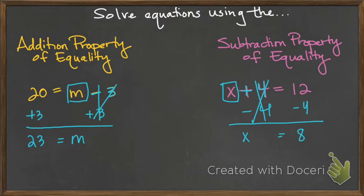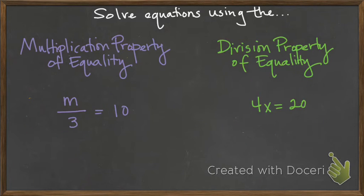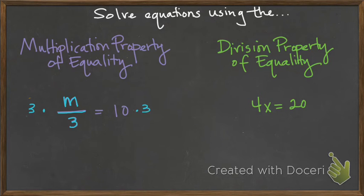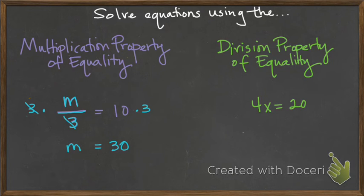Now let's talk about multiplication and division. For the one on the left, if I want to solve for m, I need to undo this dividing by 3. So I'm going to do the opposite — the inverse of dividing — which is to multiply. I'm going to multiply both sides of the equation by 3, because 3 divided by 3 is 1, and I'm left with m equals 30. I was able to find that answer using the multiplication property of equality, which allows me to multiply both sides of the equation by the same number.